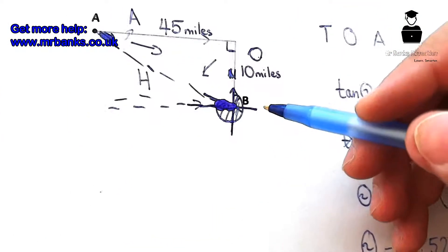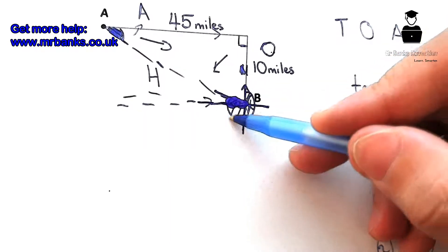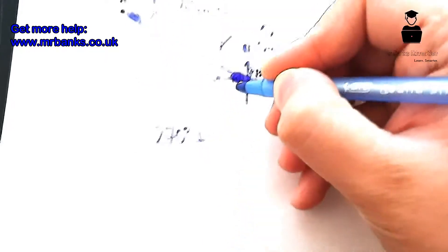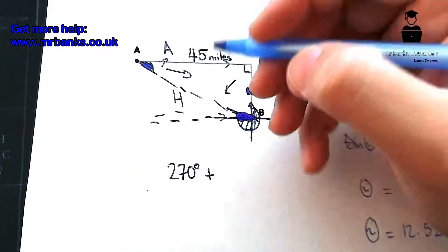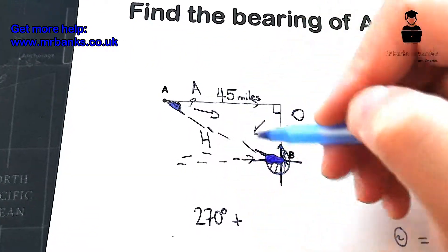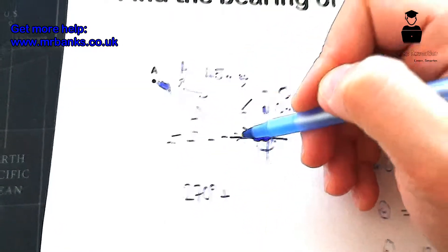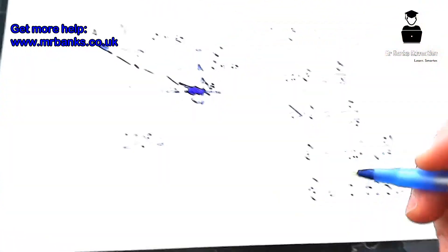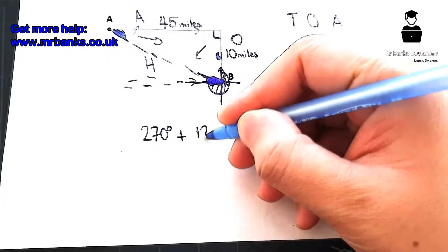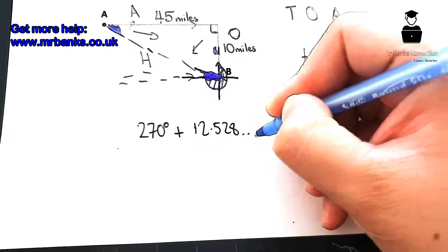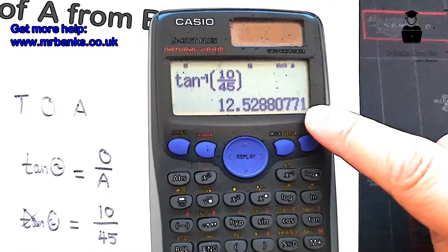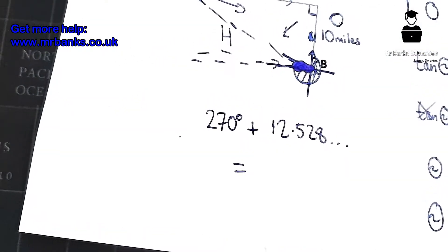So basically the bearing is going to be all of this, which was 270 degrees, plus that angle there. Like we said earlier on, this angle here is an alternate angle of that angle up there, that Z shape, so that's the same as that. We just worked out that that is 12.528 dot dot dot. So here is our answer from earlier, let's add the 270 degrees to it.